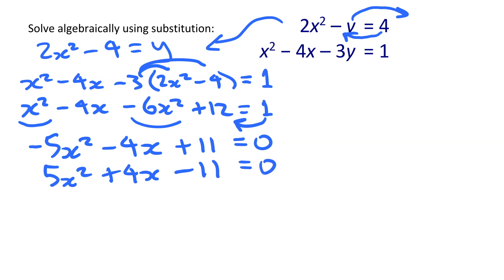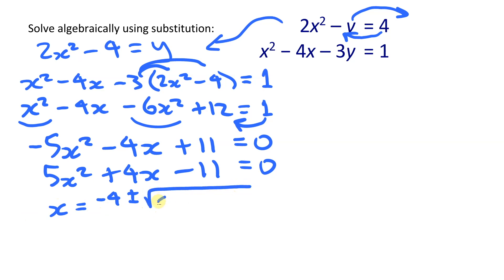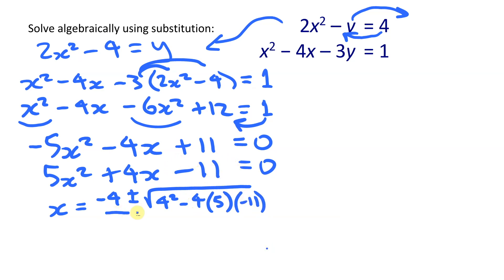Trying to factor this, you'll find pretty quickly that it doesn't factor. So we use the quadratic formula. Setting it up: x equals negative b — that's minus 4 — plus or minus the square root of b squared (4 squared) minus 4 times a (5) times c (negative 11). Don't miss the negative sign on c or you'll run into trouble. The denominator is 2a, so 10.